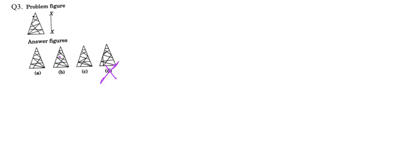Let's check some other properties. From this point, one line is reaching the other side — this is the side of the triangle and this line is touching the side of the triangle. The other line coming out of the same point is also touching the same side of the triangle. So both lines are touching the same side. But in option C, only one line is touching the opposite side — the other line is touching some other line in between. So option C cannot be correct.